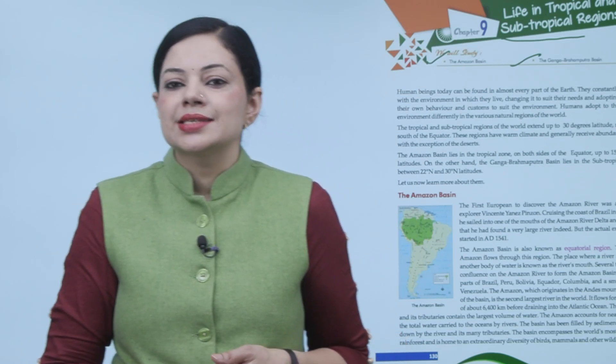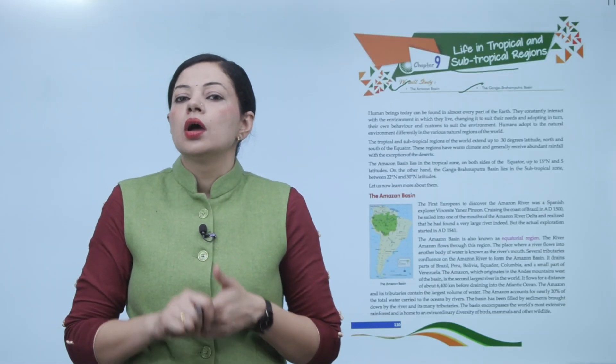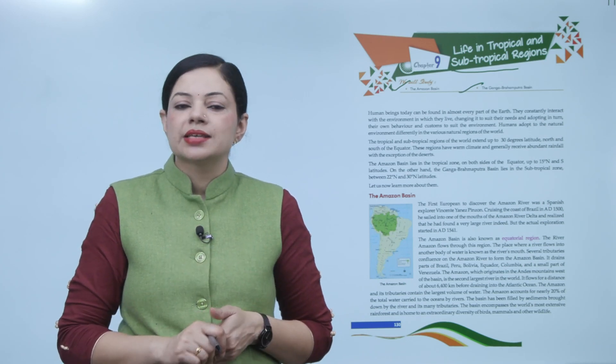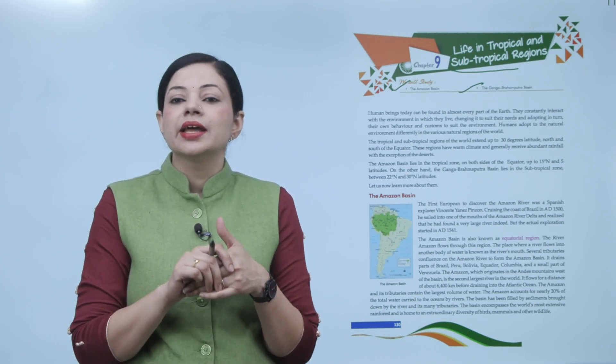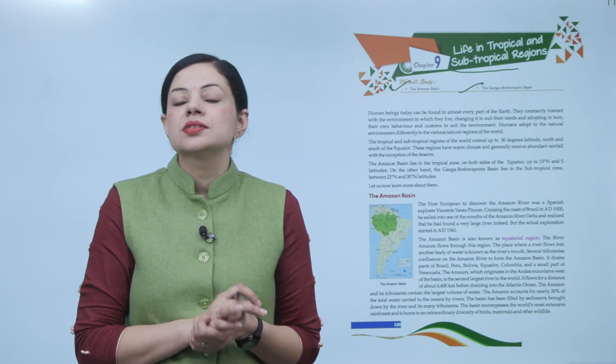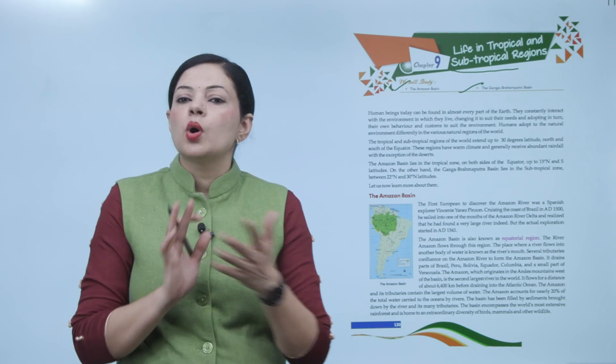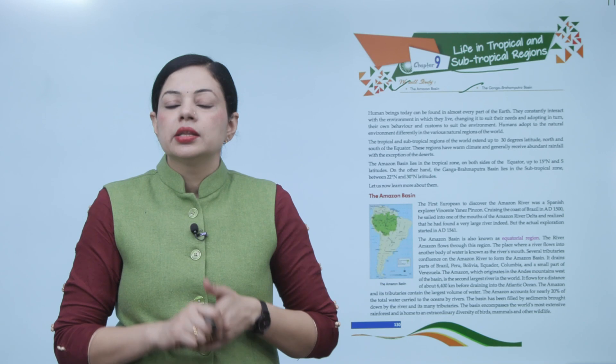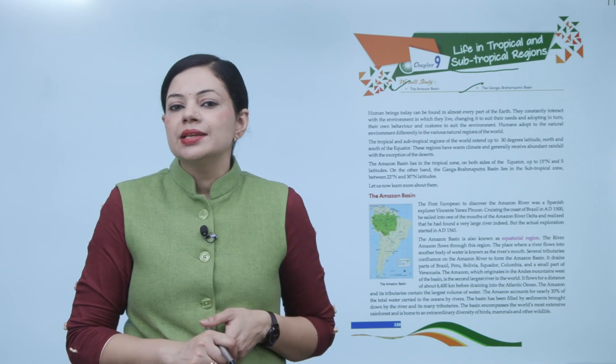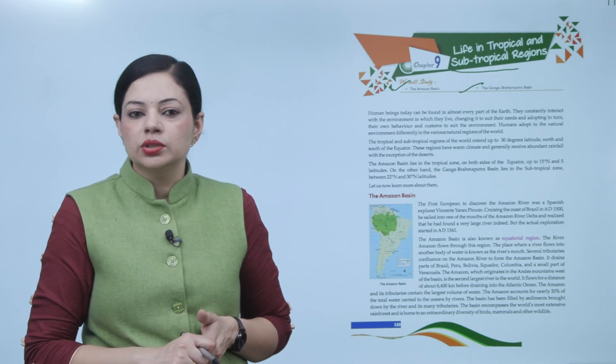The tropical and subtropical regions of the world extend up to 30 degree latitude north and south of the equator. These regions have warm climate and generally receive abundant rainfall with the exception of the desert. The Amazon Basin lies in the tropical zone on both sides of the equator up to 15 degree north and south latitude.